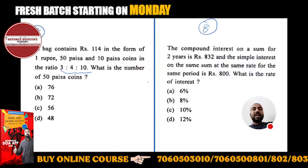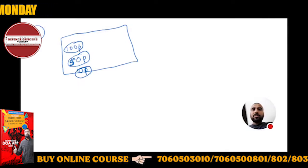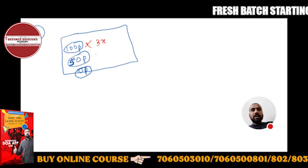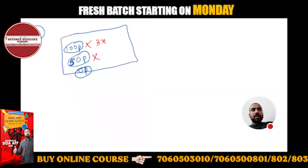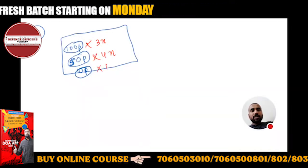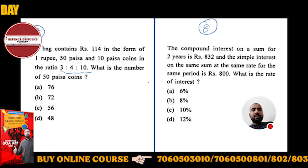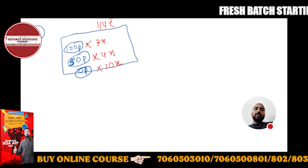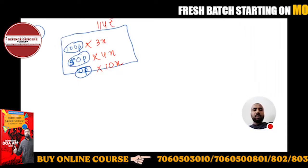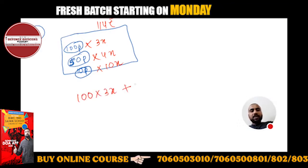By taking common multiple, their quantity will be 3 is to 4 is to 10. This will be 3x, this will be 4x, and 10x. And total paisa is 114 rupees.